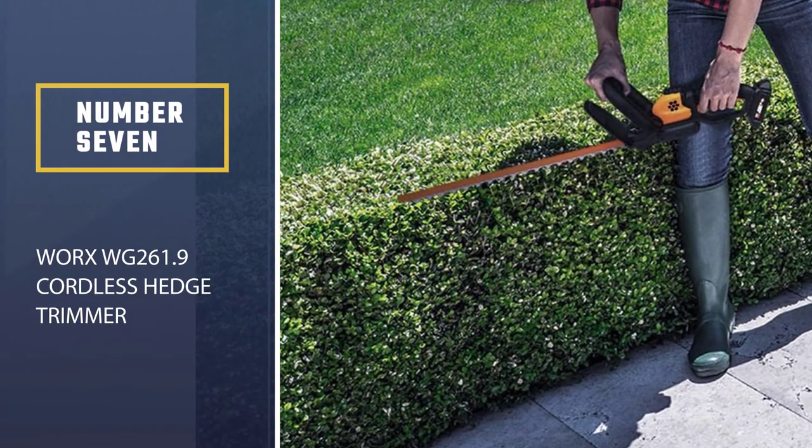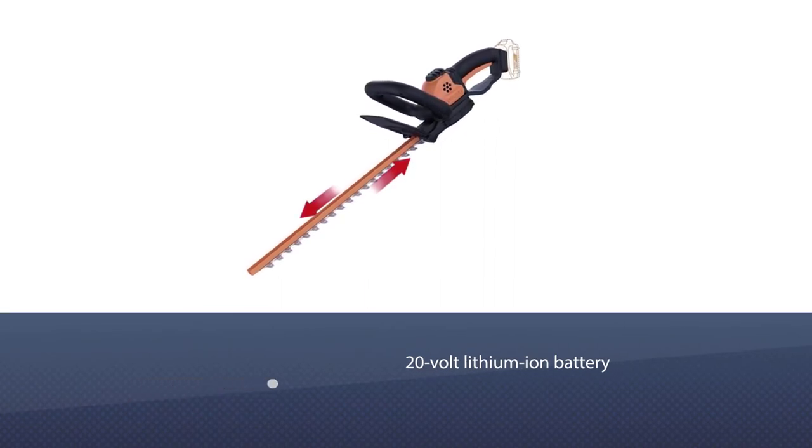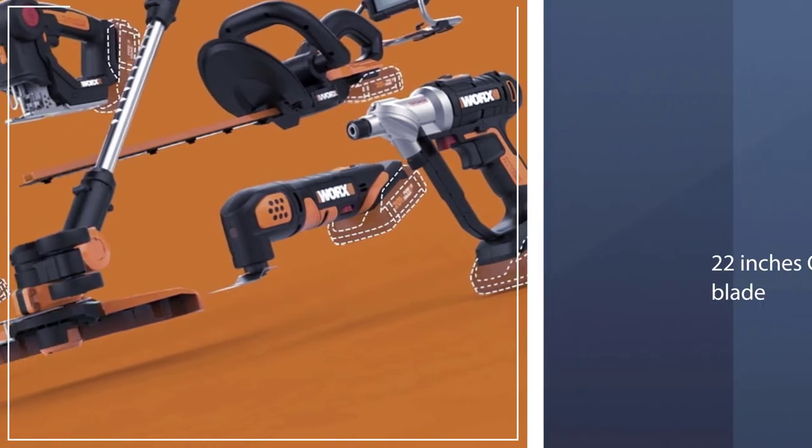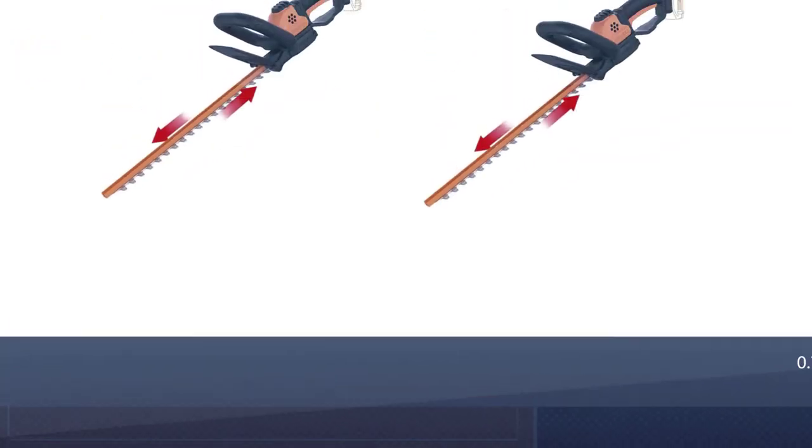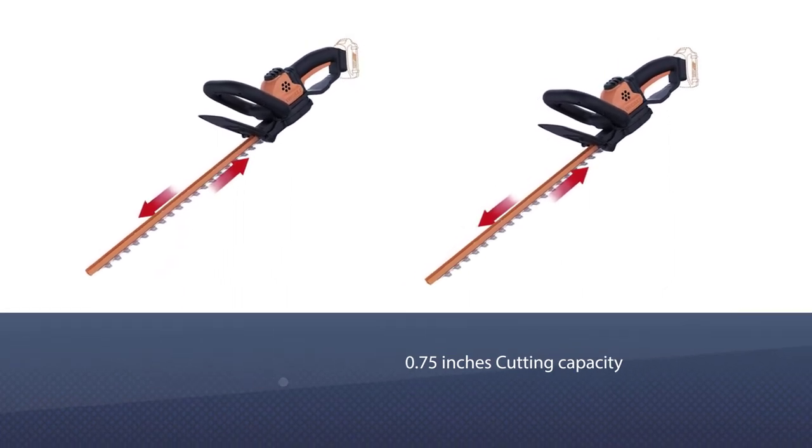Number seven: Worx WG261.9 cordless hedge trimmer. If fears of accidentally tripping on cords is keeping you from going environmentally friendly with your lawn care tools, say hello to the Worx PowerShare WG261.9. Running completely on 20-volt lithium-ion batteries, you won't be tethered to a plug.